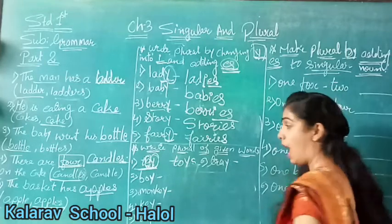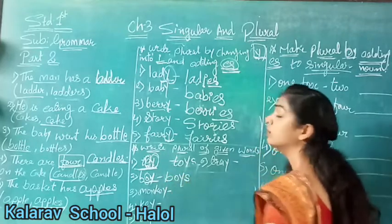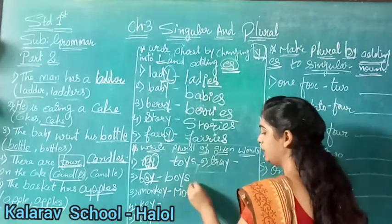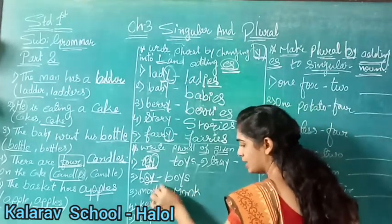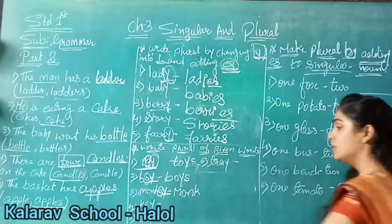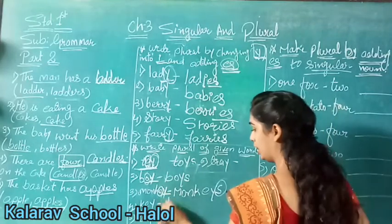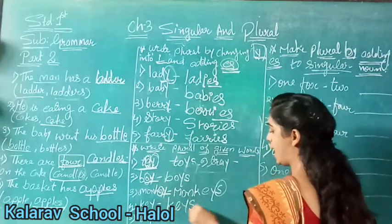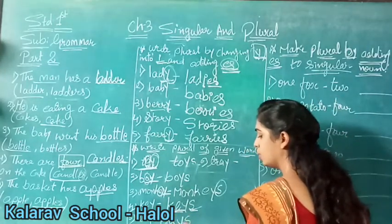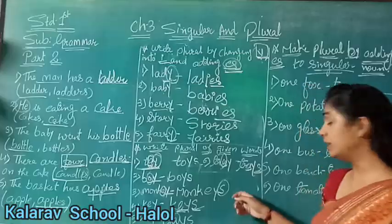Next number is boy - again before Y here is a vowel O, so the answer will be boys. Third number is monkey: M-O-N-K-E-Y - before Y here is a vowel E. E is also a vowel - A, E, I, O, U. So again we will add only S, making monkeys. Then keys - again vowel E before Y, so only S is added. Fifth number is days - vowel A is there. The sixth number also has a vowel A before Y.